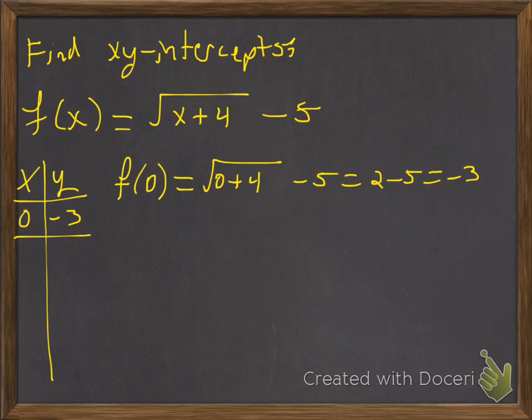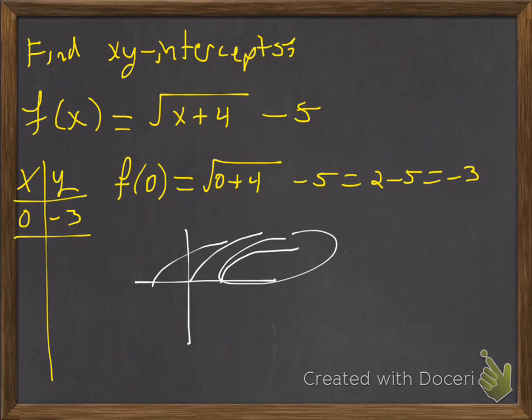Now it is possible that you will not have y intercepts. It's possible to have, this is what the function will look like, some sort of something along these lines. That's what the square root function looks like. And you can see this one over here doesn't cross the y axis. So that is certainly possible.